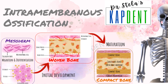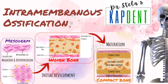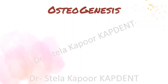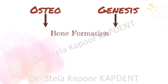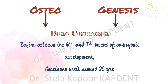Hello everyone. In today's video we will be understanding intramembranous ossification. The term osteogenesis is derived from two words: osteo meaning bone and genesis meaning formation. Therefore, osteogenesis is the process of bone formation. It usually begins between the sixth and seventh week of embryonic development and continues till around 25 years of age.